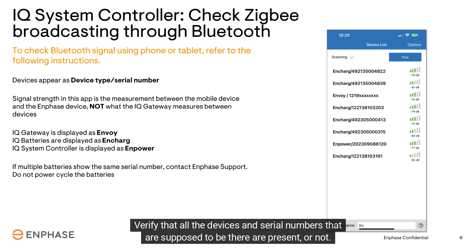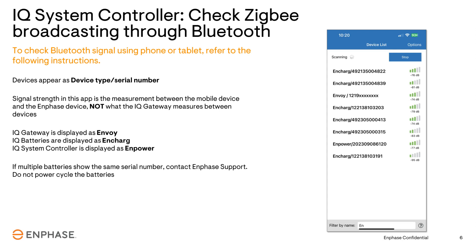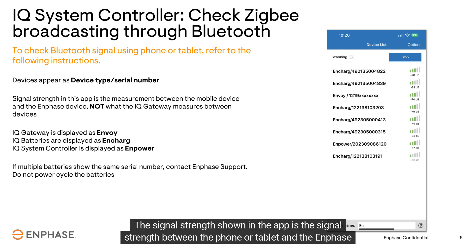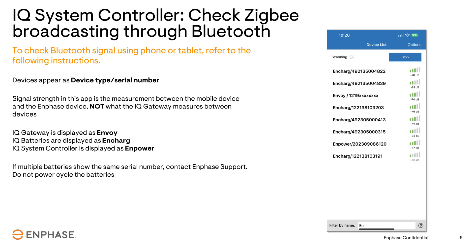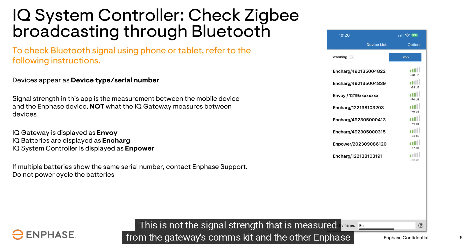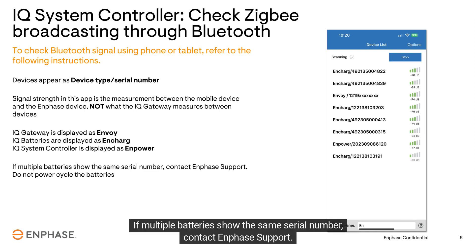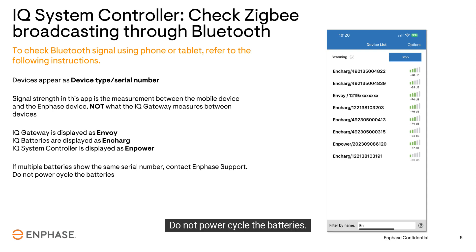Verify that all the devices and serial numbers that are supposed to be there are present. Also note the signal strength — the signal strength shown in the app is the signal strength between the phone or tablet and the Enphase device. This is not the signal strength measured from the gateway's comms kit to the other Enphase devices. If multiple batteries show the same serial number, contact Enphase support and do not power cycle the batteries.